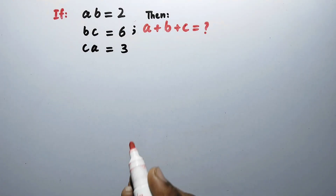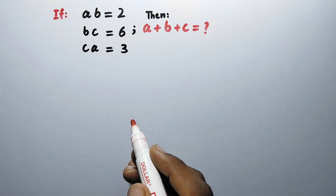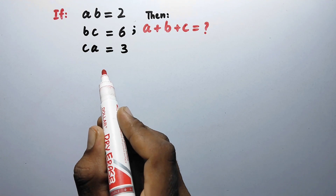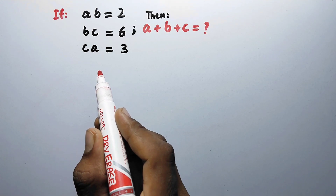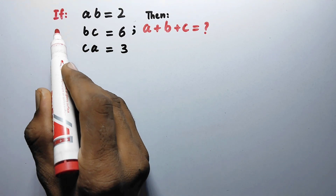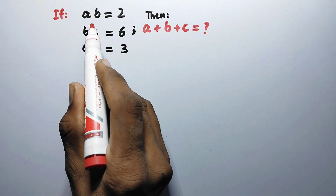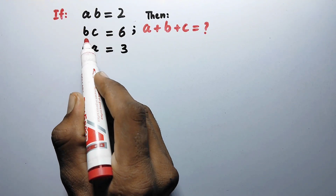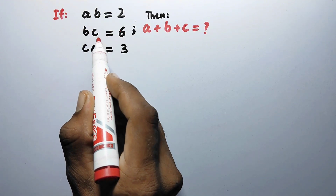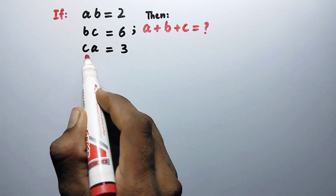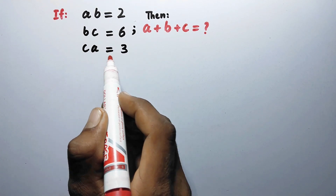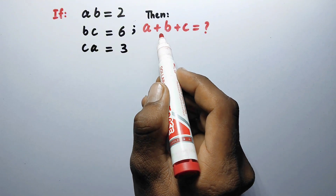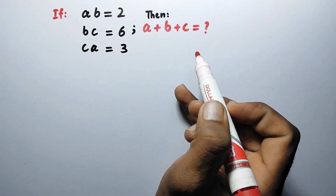Hello everyone and welcome to Explode Maths. Today in this video we are going to solve the question: if a times b is equal to 2, and b times c is equal to 6, and c times a is equal to 3, then a plus b plus c is equal to what?